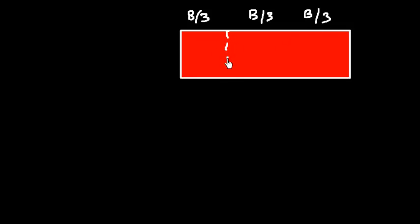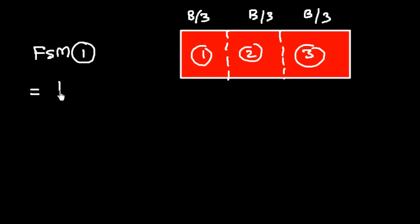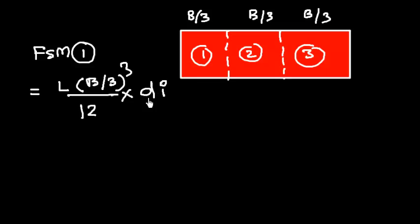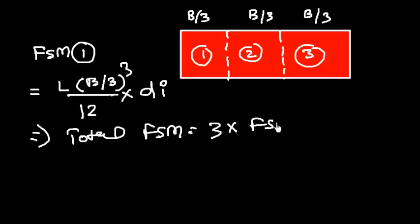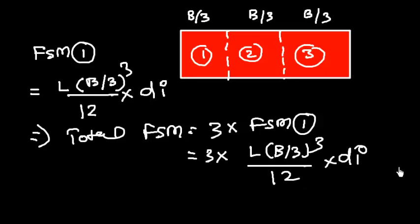Similarly, if the tank is divided into 3 equal parts, each part has a breadth of B/3. There are now 3 tanks — 1, 2, and 3. The free surface moment of one tank will be L × (B/3)³ / 12 × Di, where Di is the density of liquid inside. The free surface moments of tanks 1, 2, and 3 are all equal, so the total free surface moment is 3 × L × (B/3)³ / 12 × Di.